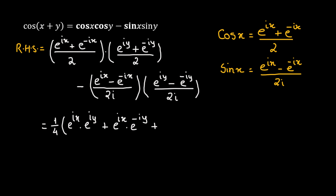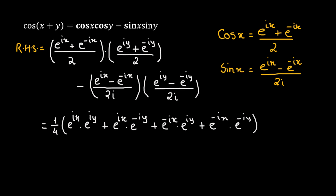The second term, e raised to the power of negative ix, also gets distributed with e raised to the power of iy plus e raised to the power of negative iy, giving us e raised to the power of negative ix times e raised to the power of iy, plus e raised to the power of negative ix times e raised to the power of negative iy.